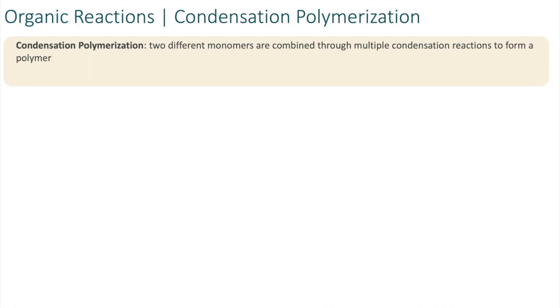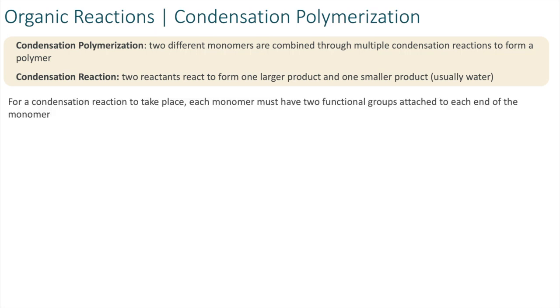Let's take a look at one of the ways that a polymer can be formed, and that's through a condensation polymerization reaction. In this type of reaction, two different monomers are combined through multiple condensation reactions to form a polymer. A reminder that a condensation reaction is where two reactants form one larger product and one smaller product, usually water. For a condensation reaction to take place, each monomer must have two functional groups attached to each end of the monomer.